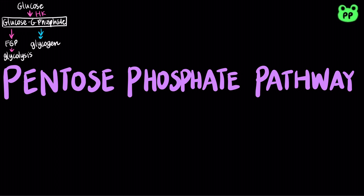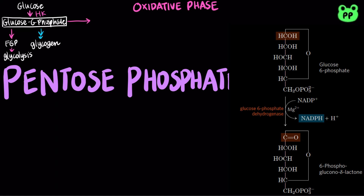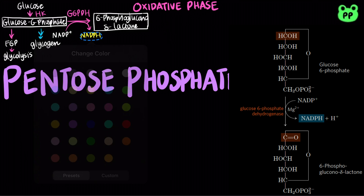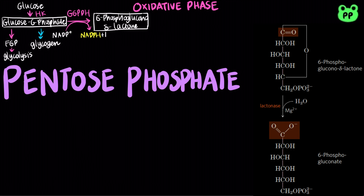The first four steps of the pentose phosphate pathway are known as the oxidative phase. First, glucose 6-phosphate is oxidized by glucose 6-phosphate dehydrogenase to form 6-phosphogluconolactone, which is an intramolecular ester. This is coupled to the reduction of NADP+ to NADPH. Next, the lactone is hydrolyzed to the free acid 6-phosphogluconate by a specific lactonase.